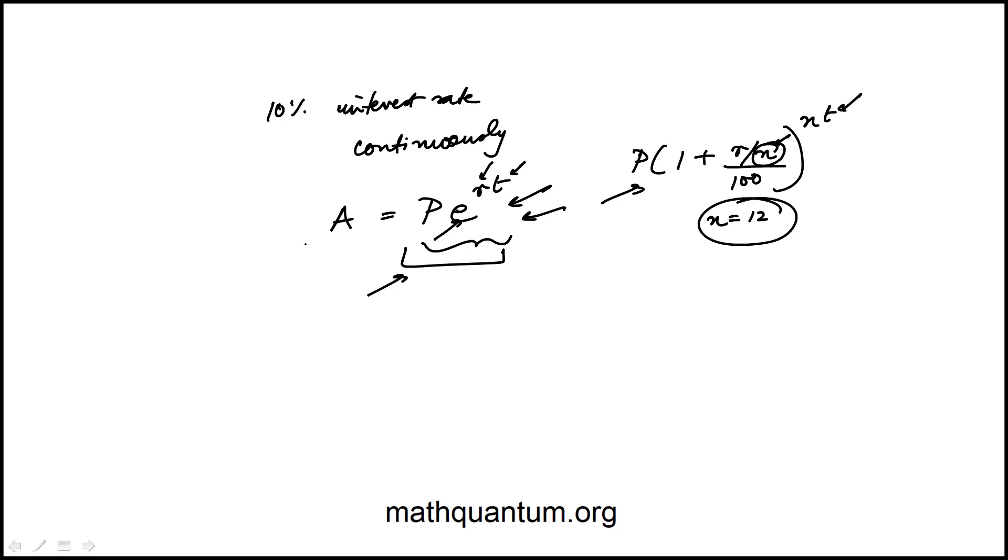But essentially this question is just about plugging in p, or the amount that was invested: a thousand, e to the power r is 0.1, converting the 10% to fraction 0.1, and the number of years is 18.